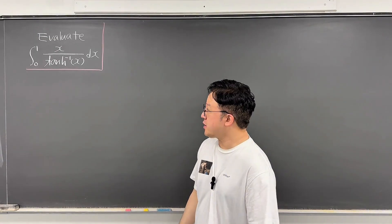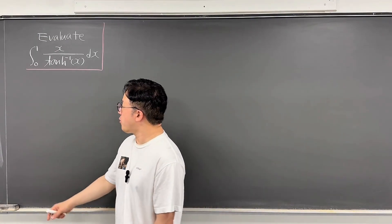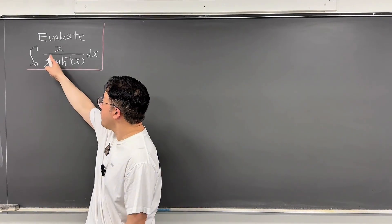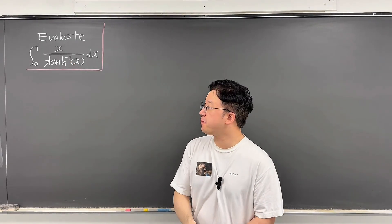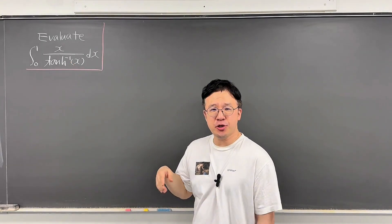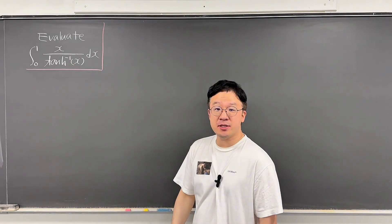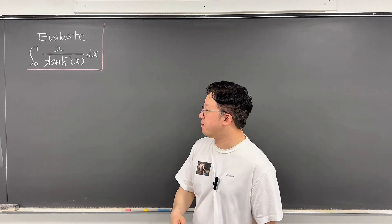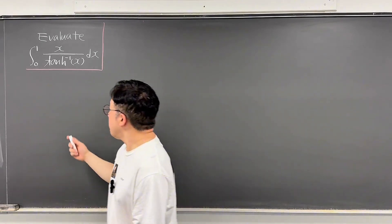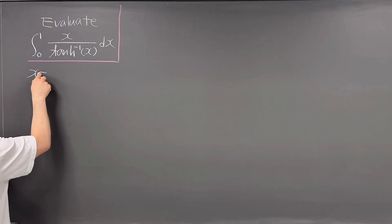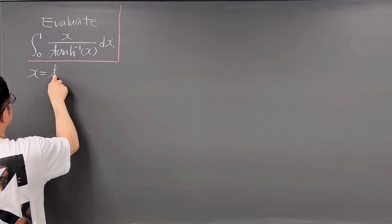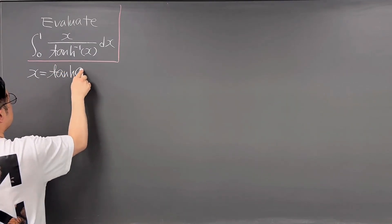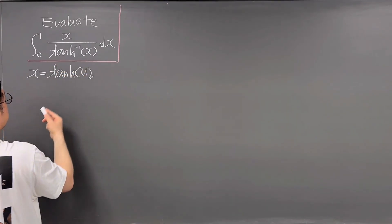Okay, here's the question. The question is the value of this integral from 0 to 1 of x over arctan(x) dx. This is a pretty tricky integral, but at the end of the day we'll be using Residue's theorem. So I'll be using the substitution x = tanh(u).